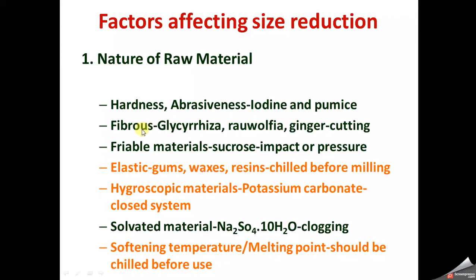Some substances are fibrous in nature, like Glycyrrhiza, Rauwolfia, and ginger, so we should opt for the cutting mechanism for size reduction in these cases. Another category is friable materials like sucrose, which can be reduced in size with impact or pressure as a mechanism. Materials which are elastic in nature, like gums, waxes, and resins, are chilled before undergoing size reduction.